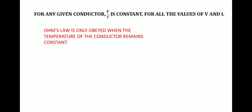For any given conductor, V by I is a constant for all values of V and I, and represents the constant resistance. Ohm's law is only obeyed when the temperature of the conductor remains constant — not only temperature, but any physical conditions must remain constant for Ohm's law to be obeyed.